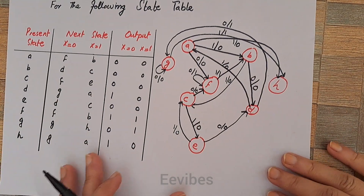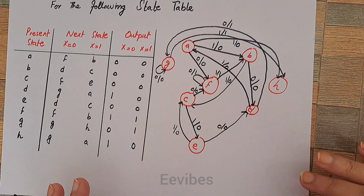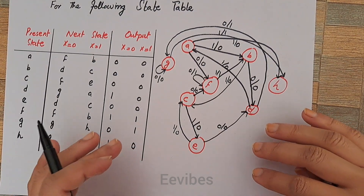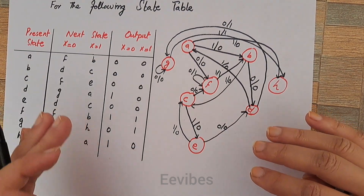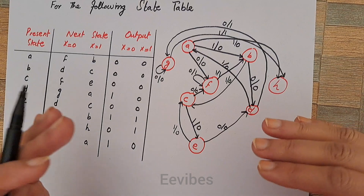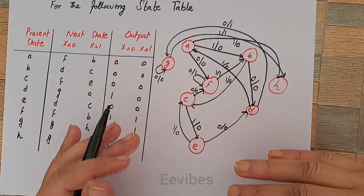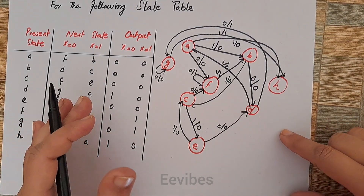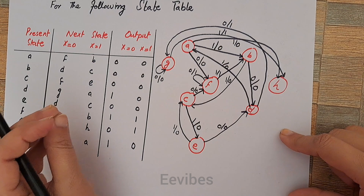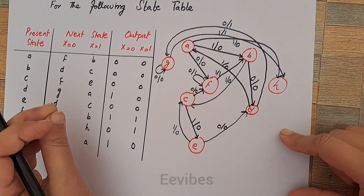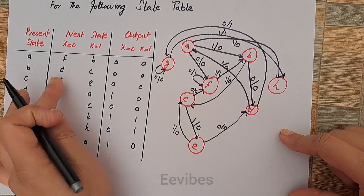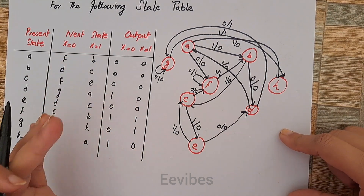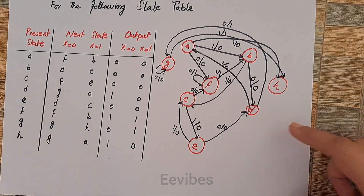The next step is to reduce the state table. For that we need to identify states that are identical to each other. By identical states, we mean states that are going into the same next states for the same inputs and producing the same outputs.